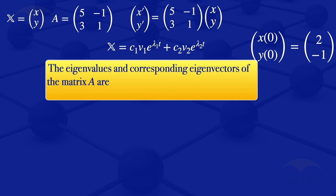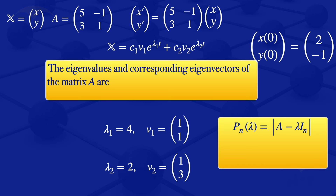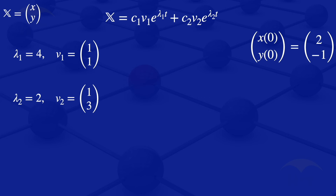The eigenvalues and corresponding eigenvectors of matrix A are: lambda_1 = 4 with eigenvector V1 = [1; 1], and lambda_2 = 2 with eigenvector V2 = [1; 3]. These were obtained by finding the characteristic polynomial det(A - lambda*I) = 0 and solving for its roots, then finding non-zero vectors satisfying (A - lambda*I)x = 0.